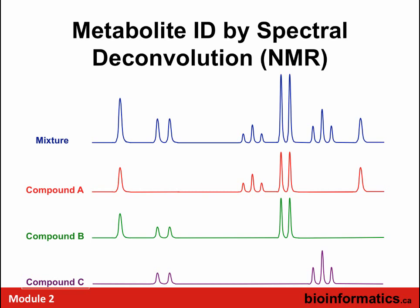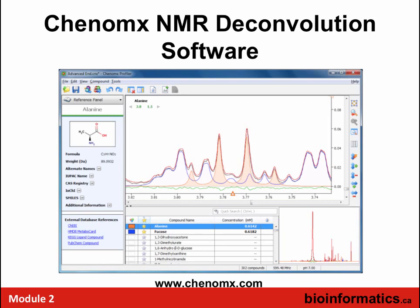There is software that allows you to do this deconvolution. A company based in Edmonton called Chenomx developed one of the first software tools for spectral deconvolution, used quite widely. With their NMR spectrum viewer, a reddish-highlighted peak identifies a compound hidden under other peaks, and a list below gives compound names and concentrations from a serum spectrum — about 50 compounds. A skilled person can identify all 50 compounds by deconvolution in about 30 to 40 minutes.